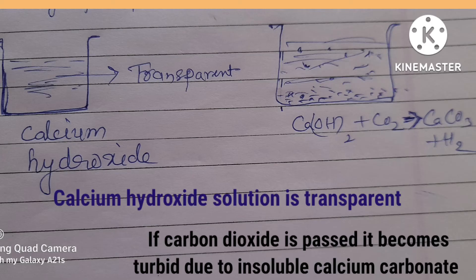Let's take the famous example of calcium hydroxide. If dissolved in water, you take out the water after the sediment is settled down. It is a transparent solution, and if CO2 is passed into it, it becomes turbid due to the formation of calcium carbonate.